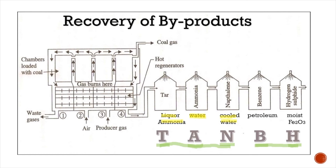Recovery of benzene: the gases are passed through another tower containing petroleum and benzene, where benzene gets condensed and is recovered. Recovery of hydrogen sulfide: the remaining gases are passed through a purifier packed with moist Fe₂O₃, and hydrogen sulfide is retained. Finally, the recovery of coal gas — coal gas is used as fuel gas.